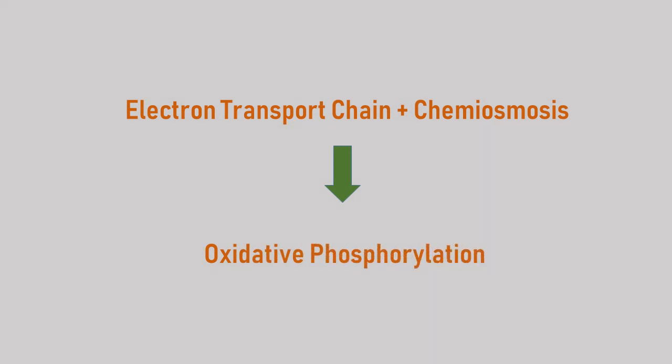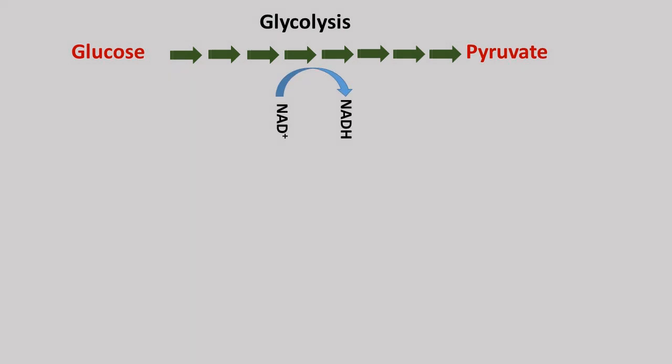Before beginning with electron transport chain and oxidative phosphorylation, first let's recap. In previous videos, we discussed glycolysis and citric acid cycle. In glycolysis, oxidation of one glucose molecule converts into two molecules of pyruvate. We also get reduction of oxidized NAD into NADH. Although ATP was also produced, we are more focused towards electron-carrying molecules, reduced NAD and reduced FAD, because this is what the electron transport chain is all about.